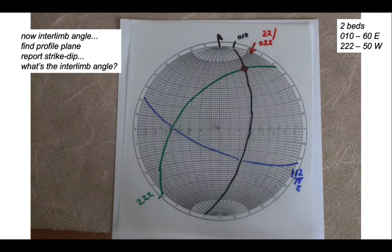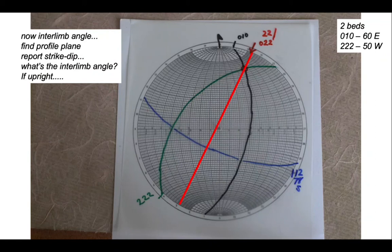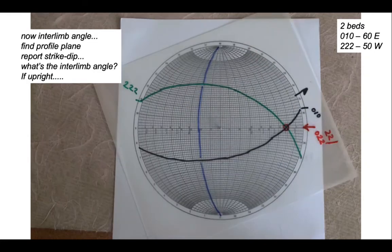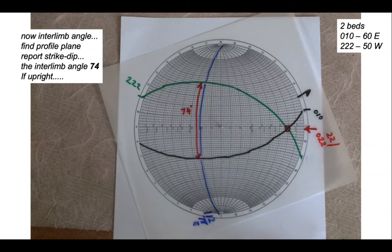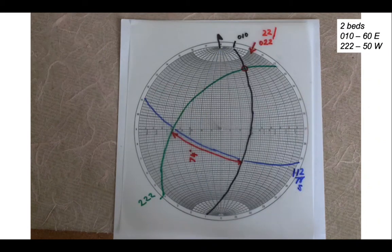Going back to our data: if the fold is upright, the axial surface will go through the pin in the stereonet — by definition it will be vertical, and it must contain the hinge. Spinning the profile plane around so it's lined up with tracing circles, we measure the angle that contains the axial surface, which is 74 degrees. That is the interlimb angle for an upright fold with those two limb orientations.